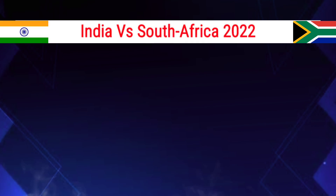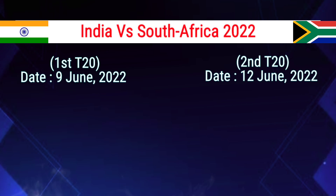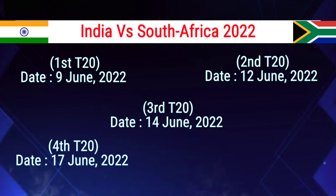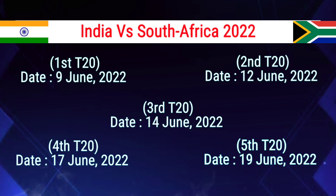India vs South Africa First T20 Match Date: 9th June 2022. Second T20 Match: 12th June. Third T20 Match: 14th June. Fourth T20 Match: 17th June. Fifth and Last T20 Match: 19th June 2022.